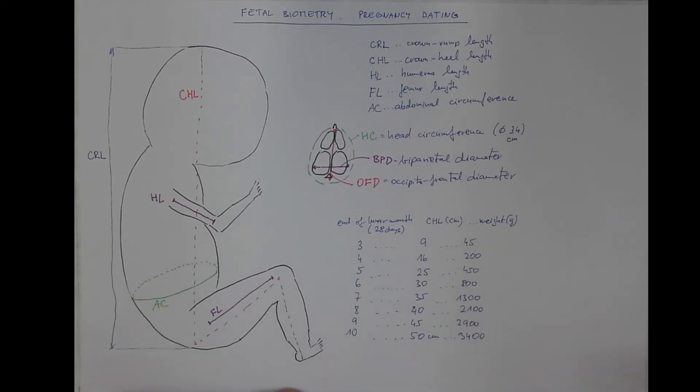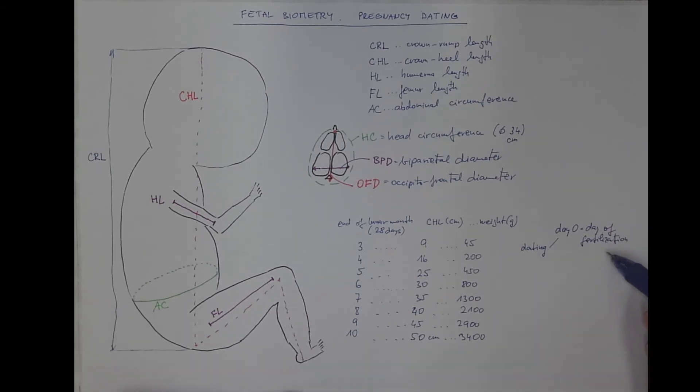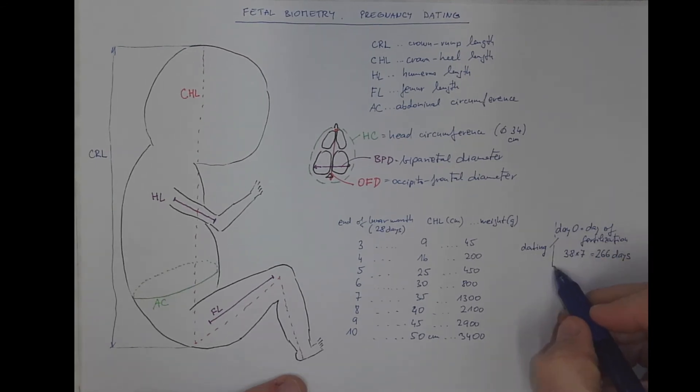Speaking about age, let's consider the two ways of pregnancy dating. The first system is based on the assumption that the day zero is the day of the fertilization. This is routinely used in clinical embryology. And using this system, then the pregnancy lasts for 38 weeks. 38 times 7 equals 266 days. So that's the first system.